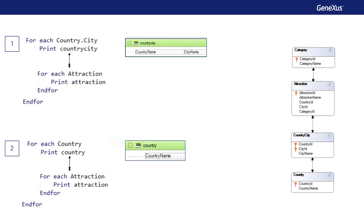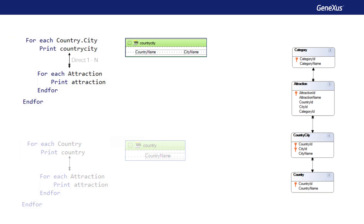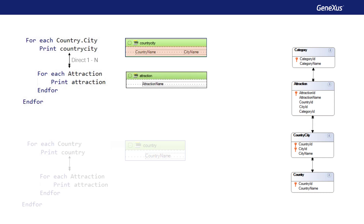Let's examine these two cases of one-to-N relationship between the foreach commands, and therefore of join. The first one is direct. Note that the base tables of the external and nested foreach are country city and attraction respectively. They are related by a one-to-N relationship. The name of the country and city will be printed, and for each pair, there are attraction names.